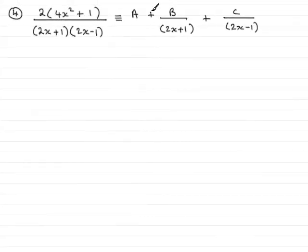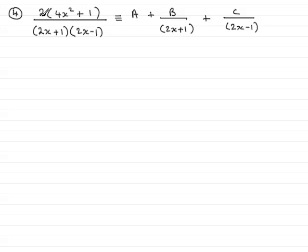In this question we've got to work out the constants a, b and c in this particular identity. In partial fractions type questions, always multiply both sides by the denominator. So if I multiply by 2x plus 1 times 2x minus 1, it's just going to leave me with the numerator: 2 lots of 4x squared plus 1.